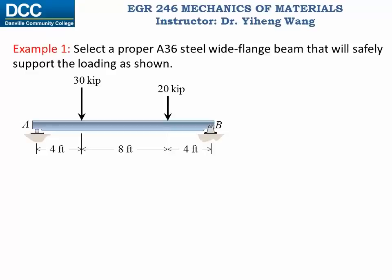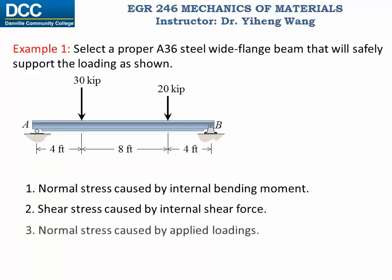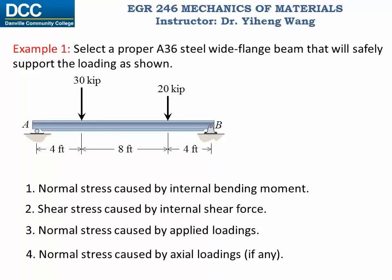Based on our previous study, the key parameter in our consideration should be the stresses developed in the beam because of the external loadings. We have the normal stress caused by the internal bending moment — the bending stress — shear stress caused by the internal shear force, normal stress caused by the applied loadings (in this case the 20 kilopounds and 30 kilopounds of vertical forces), and in some cases normal stress due to axial loadings, though in our example here we don't have any.